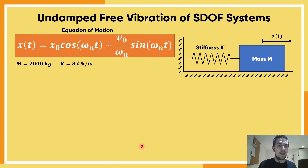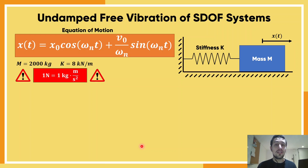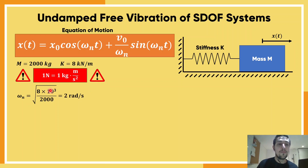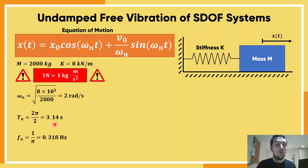Let's look at an example where mass equals 2,000 kilograms and stiffness equals 8 kilonewtons per meter. At this stage you need to check that your units are consistent. In the SI system, newtons are kilograms times meters divided by seconds squared. Kilonewtons and kilograms don't match, so either convert kilonewtons to newtons by multiplying by 10³, or convert the mass to tons — both give the same result. In this case, the circular natural frequency is 2 radians per second, the natural period is 3.14 seconds, and the natural frequency is 0.318 hertz.